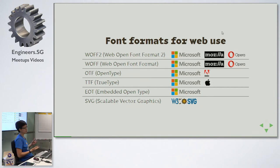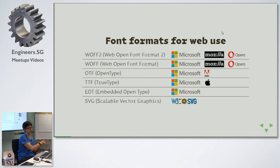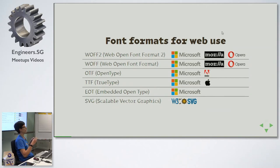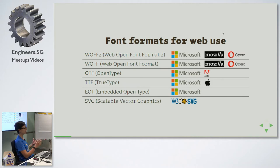Apple went off and made TrueType GX, later renamed Apple Advanced Typography, while Microsoft went to Adobe and they worked together to come up with OpenType — the OTF format — which is probably the most widespread format now. These newer font formats can contain a lot more glyphs. A basic simplified Chinese font has about 20,000 glyphs, and the old formats couldn't contain that many, but OTF and AAT can.